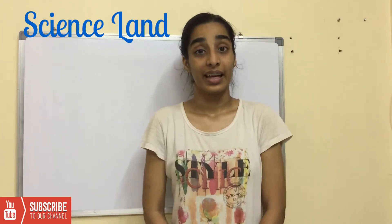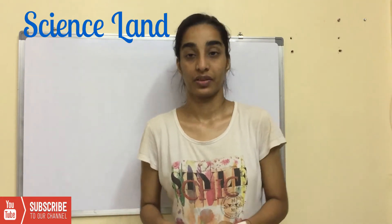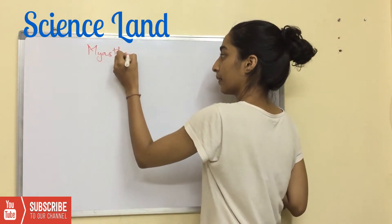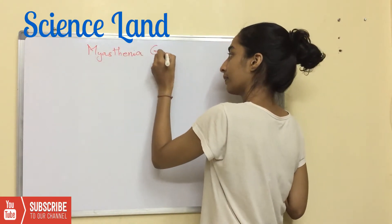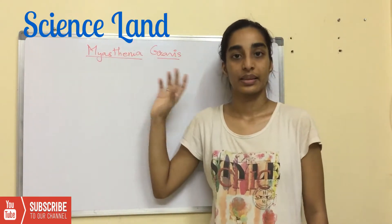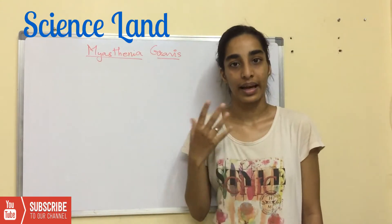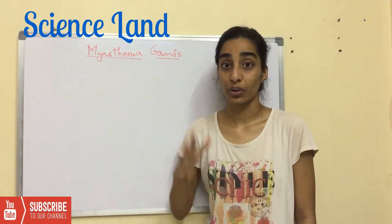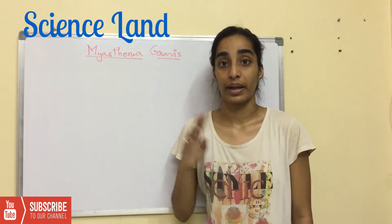Hello friends, today I'm going to explain what is Myasthenia Gravis. Myasthenia Gravis is a classic example of an autoimmune disease which is mediated by blocking antibodies.